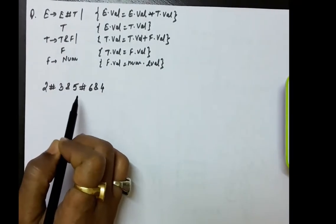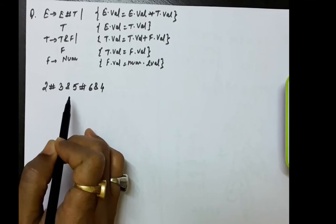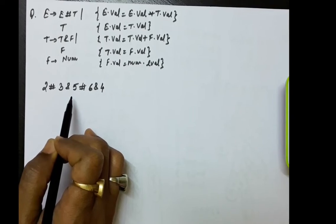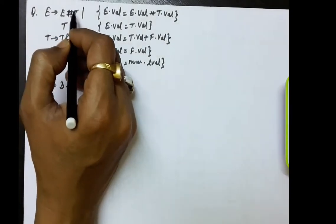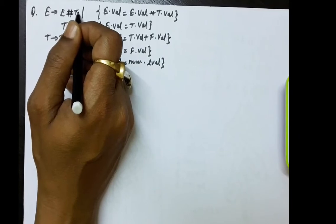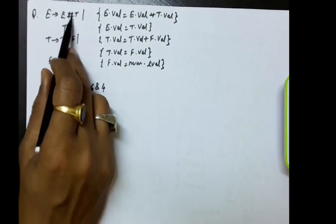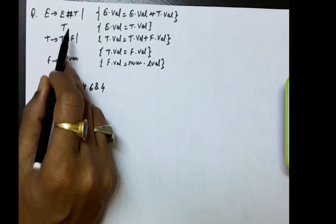A string is given and we just have to parse it and find out, according to the semantic rules, what value is evaluated by this string. While doing the parsing, we will also be finding out the value. It is not always necessary that you draw the parse tree to find out the value. You can observe from the grammar itself that the hash symbol is at the upper level and the 'and' symbol is at the lower level, meaning hash has less precedence than 'and', or you can say 'and' is having more precedence than hash.